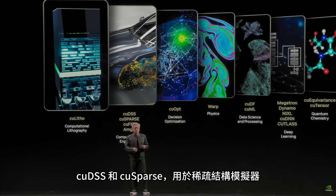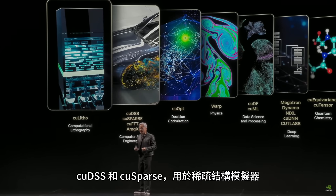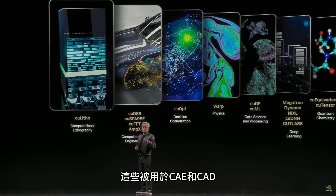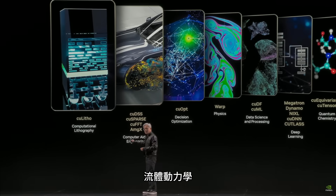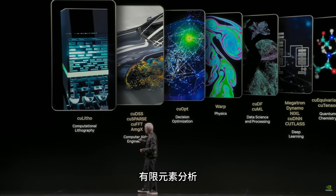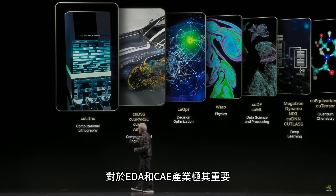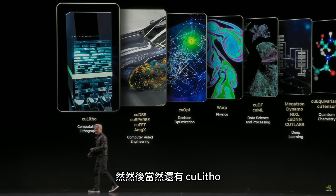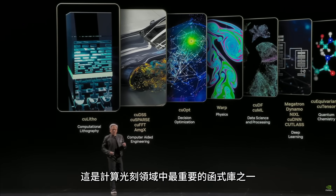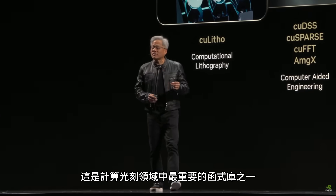cuDSS and cuSparse for sparse structure simulators. Those are used for CAE and CAD fluid dynamics, finite element analysis — incredibly important for EDA and CAE industries. And then of course cuLitho, one of the most important libraries for computational lithography.